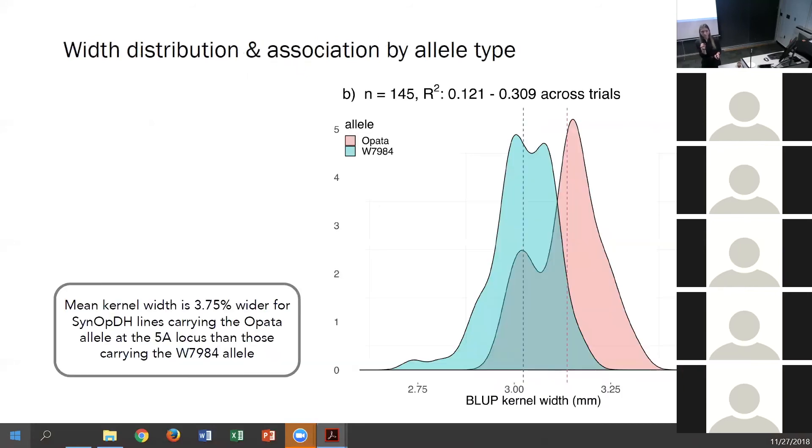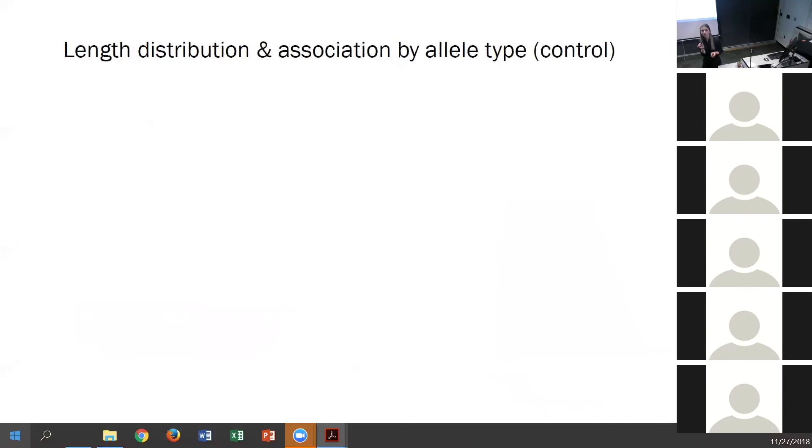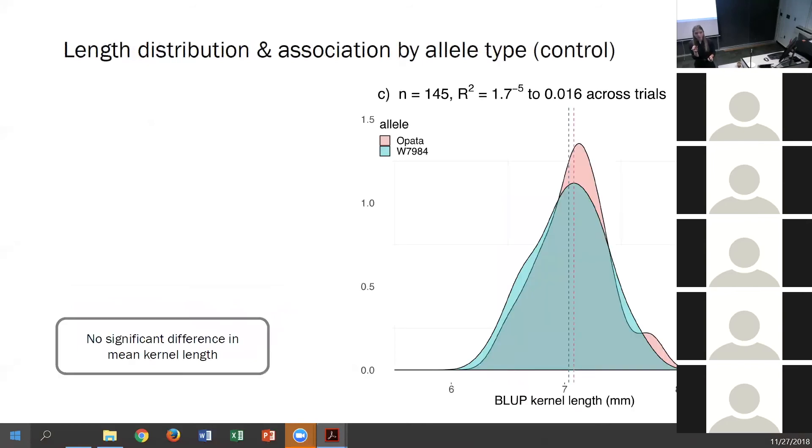And we see a similar story when we look at the width distributions. Here width is on the x-axis, and again there's a 3.75% increase in kernel width associated with doubled haploid lines that carry the Opata allele rather than the synthetic at our locus. I mentioned previously that the kernel length can also independently impact kernel weight, and so here we see at our locus there's little to no difference in kernel length for whether a doubled haploid plant carries either parent's allele, which indicates to us we're pursuing a gene in this region that controls thousand kernel weight, most likely due to an increase in kernel width.